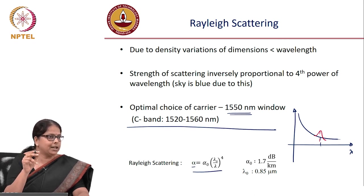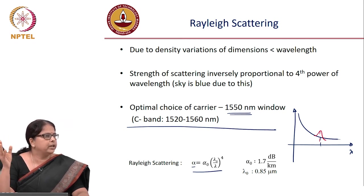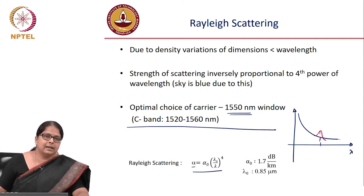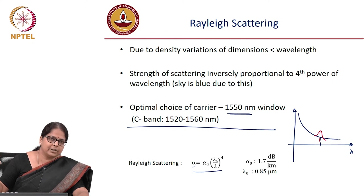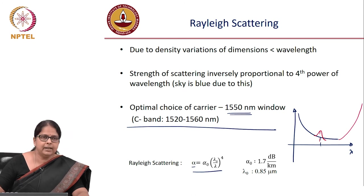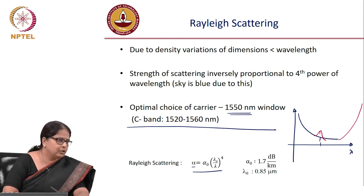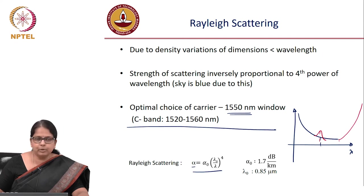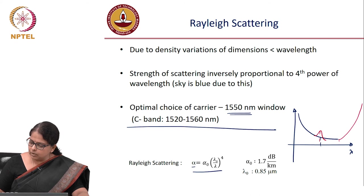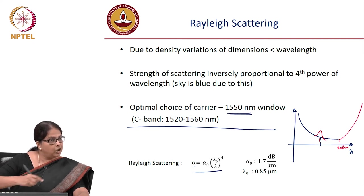The molecular vibrational resonances of silica itself begin around 2200 nm. Beyond approximately 2000 nm, loss actually increases because silica starts absorbing. Most textbooks only show the loss curve up to this region without showing the subsequent rise in loss.